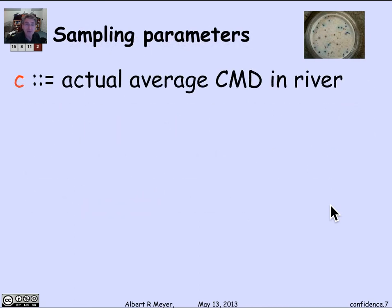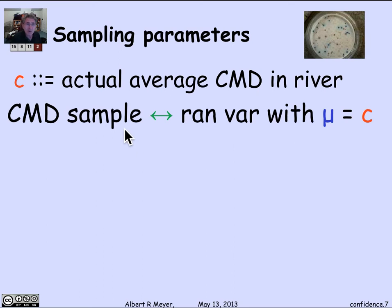How are we going to do that? Let's look at the parameters in the pairwise independent sampling theorem and see what we have. C is the actual average CMD in the river. That's what we don't know. We're trying to estimate it. Our samples correspond to a random variable - a measurement of the CMD at a random time and place - and that defines a random variable whose expectation is the unknown C.